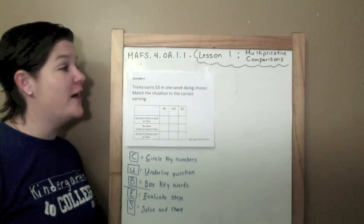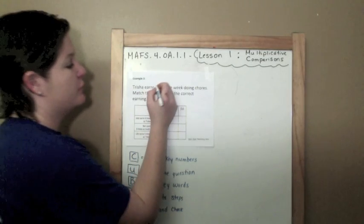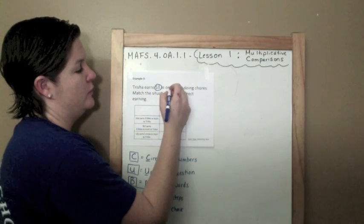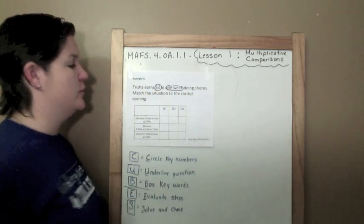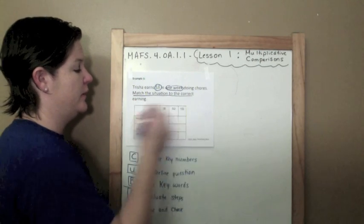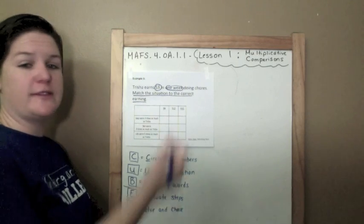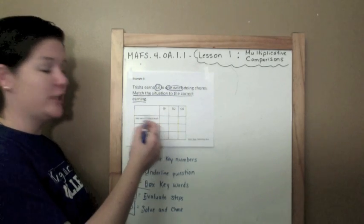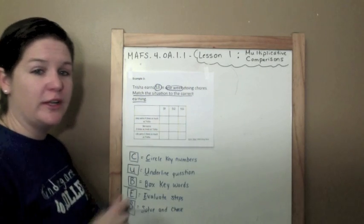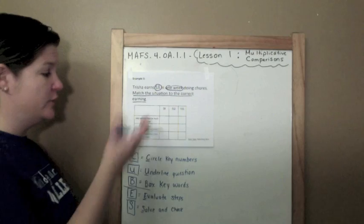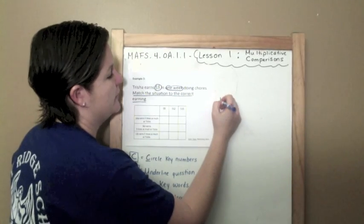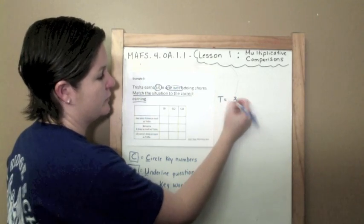Moving on, example three. Trisha earns three dollars in one week doing chores. Match the situation to the correct earning. That's what the question's asking me to do. This is a matching item. So what I need to do is look at this column over here and match it by putting a check mark in the box that applies to the scenario.